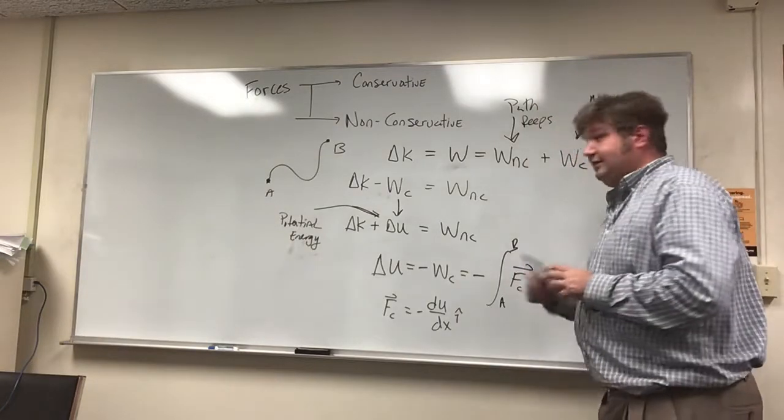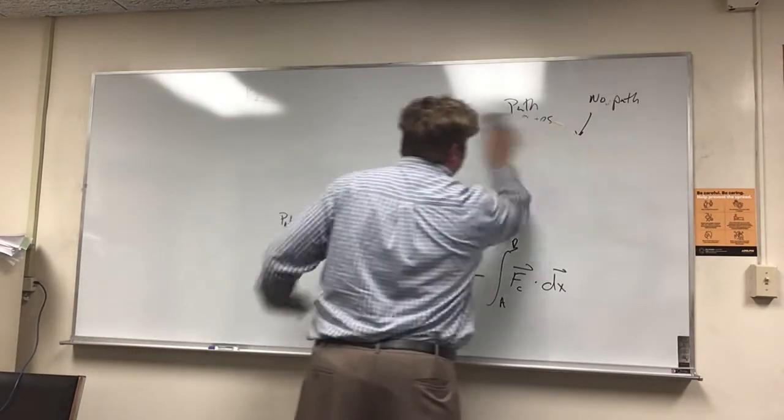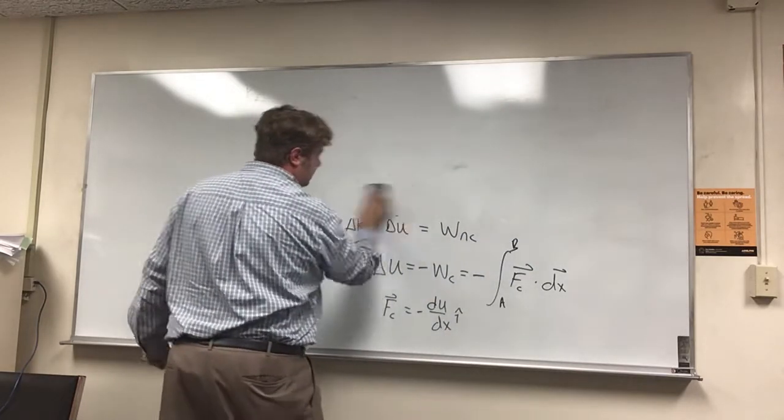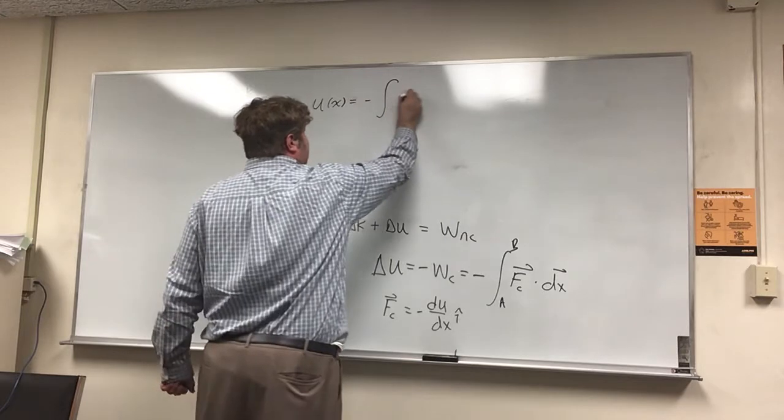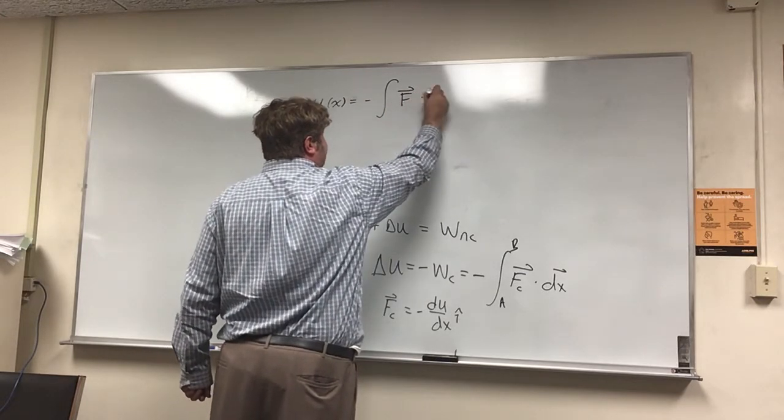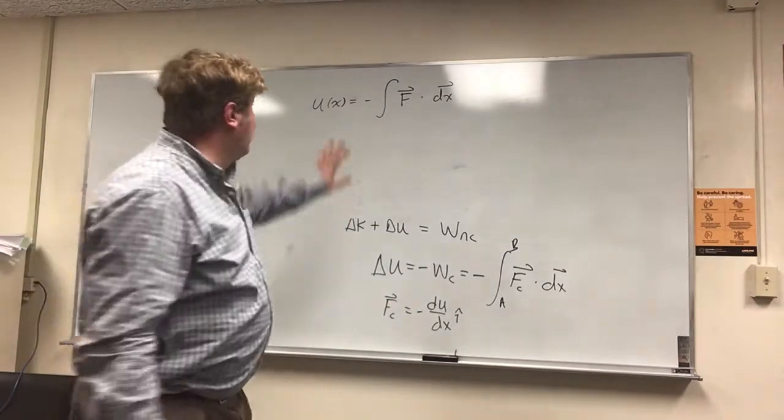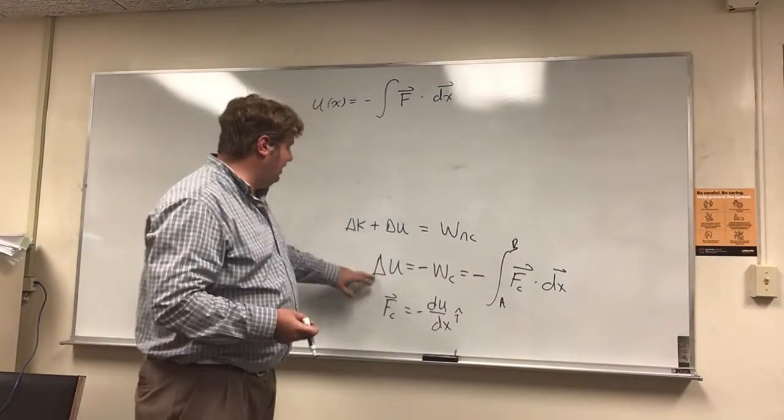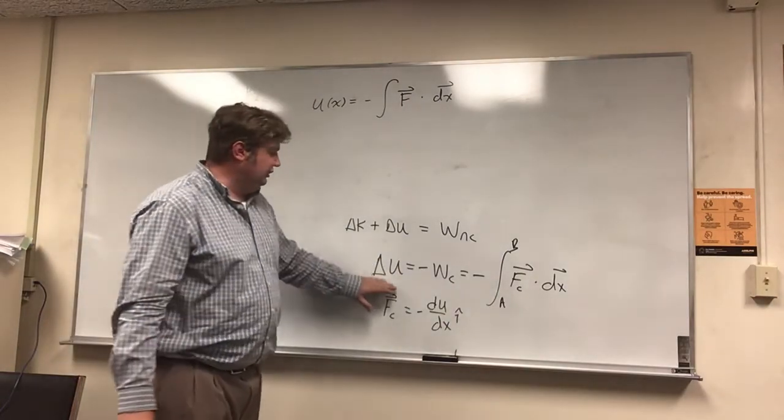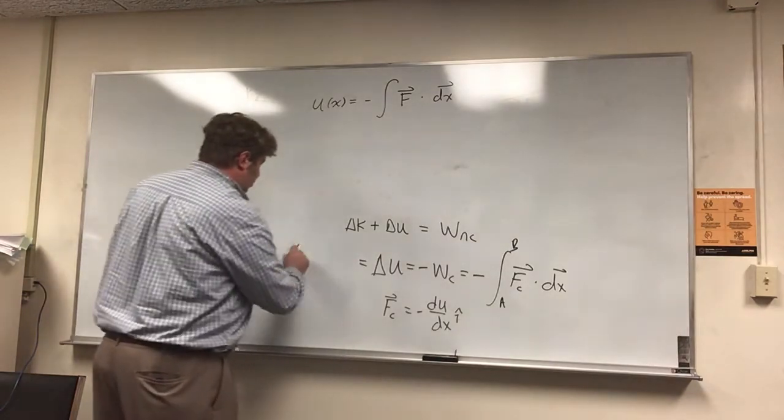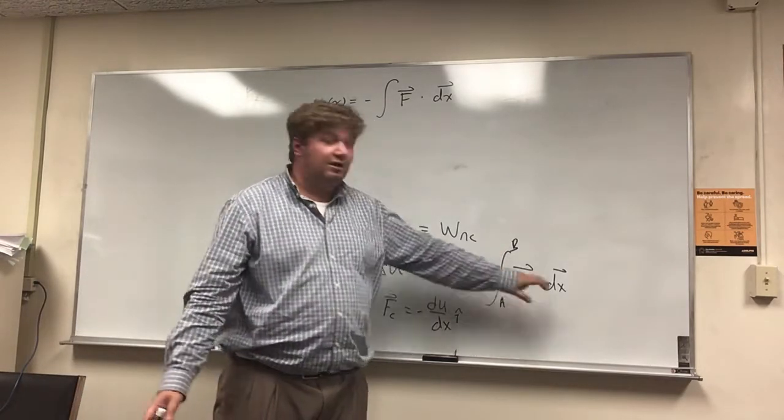There's an interesting subtlety here. So U(x) is equal to the integral of F dot dx. Now there's an instinct to just go ahead and write down that equation, whereas here I wrote it as ΔU. Now I love this notation. This is the one that I use almost exclusively. ΔU, the U of B minus U of A, is equal to minus the integral from starting at point A to point B of F dot dx.